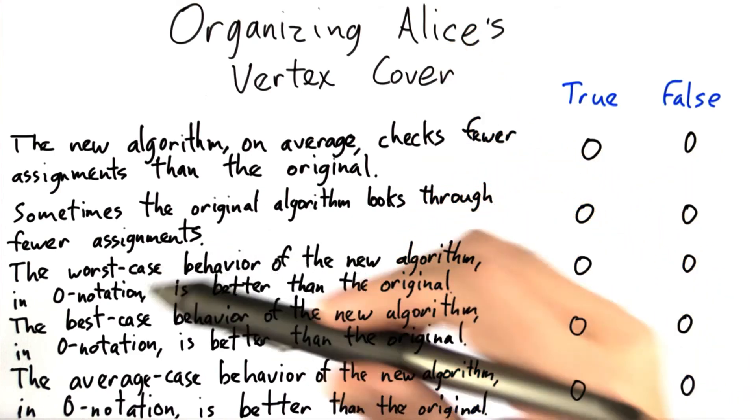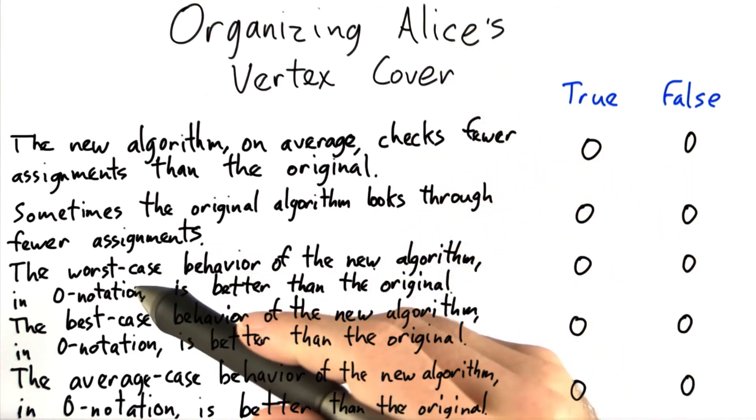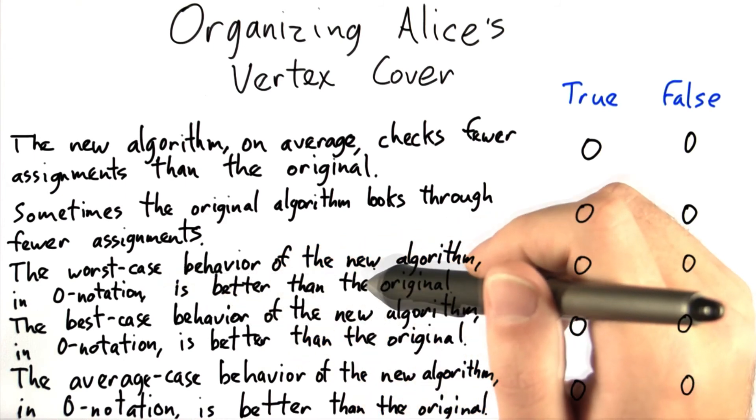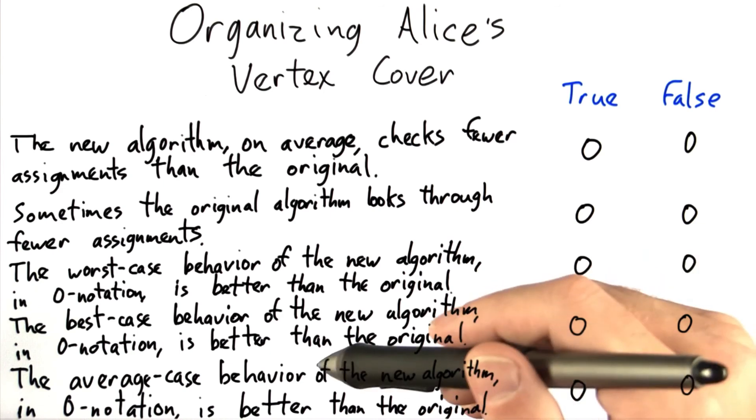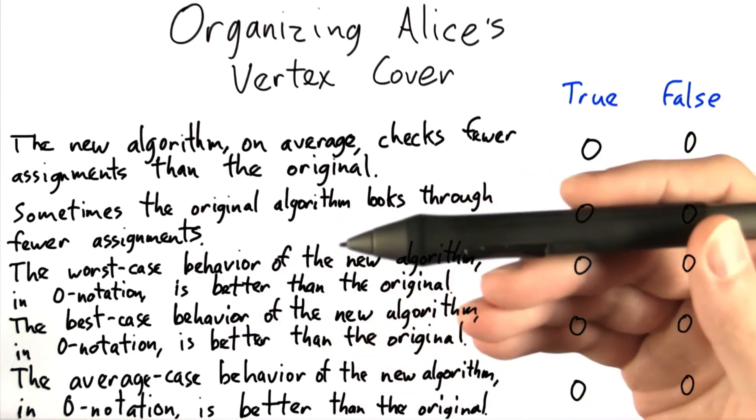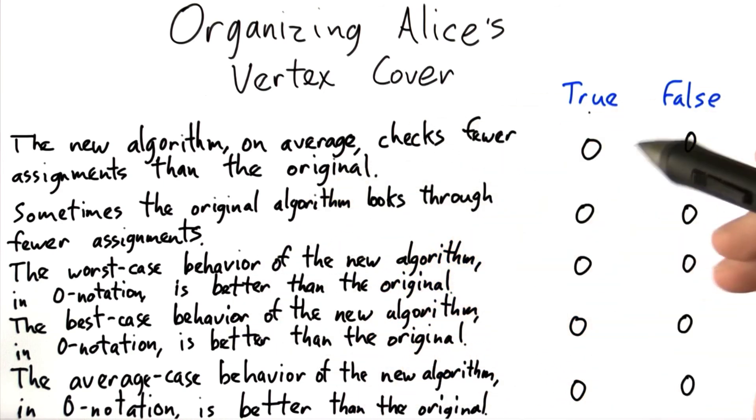Next, is the worst case behavior of the new algorithm in O-notation better than the original? And similarly, for the best case and the average case of the new algorithm. In O-notation, are they better than the original? Please check all, either true or false.